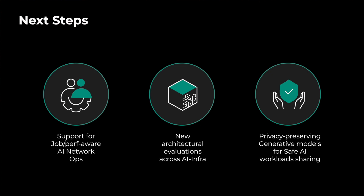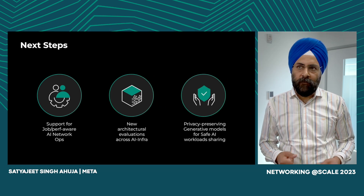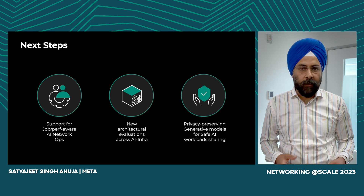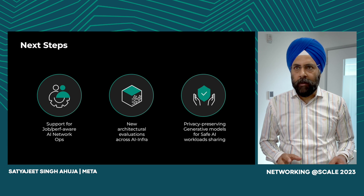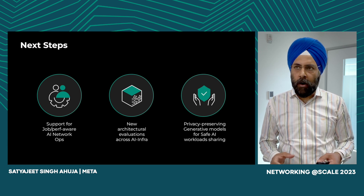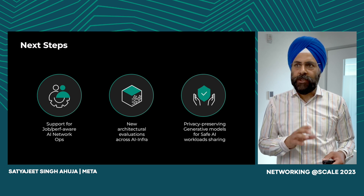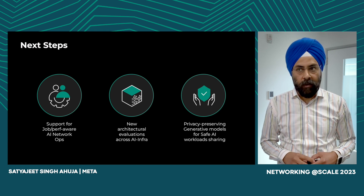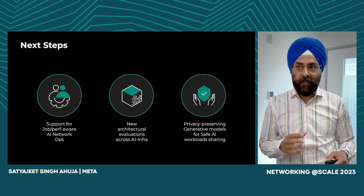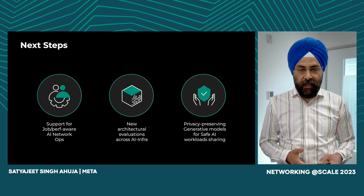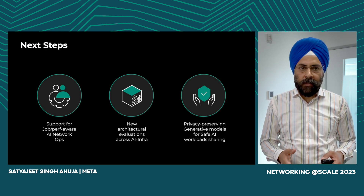One of the key next steps is to provide a framework that can assist network operational engineers to perform all production activities while understanding the impact of their actions on production jobs. For example, if an operational engineer is performing a drain of a network switch, they should be able to gather insights on what performance degradation is observed by jobs running in the cluster — essentially an after-effect of the action. A more involved example would be to suggest a set of models that should be removed from the cluster or placed elsewhere, so that a particular drain of a switch can be performed with no performance impact on the remaining jobs. This signal can be used by the orchestrator that is placing workloads in the cluster.